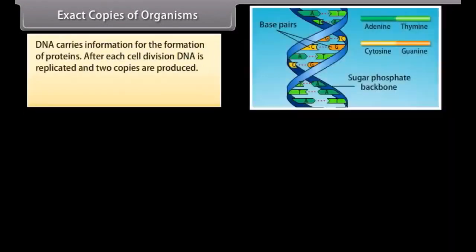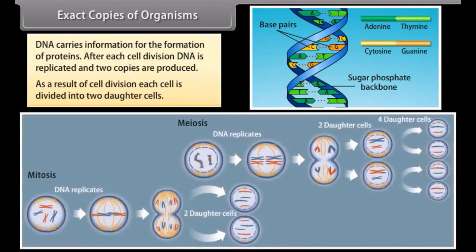DNA carries information for the formation of proteins. After each cell division, DNA is replicated and two copies are produced. As a result of cell division, each cell is divided into two daughter cells.